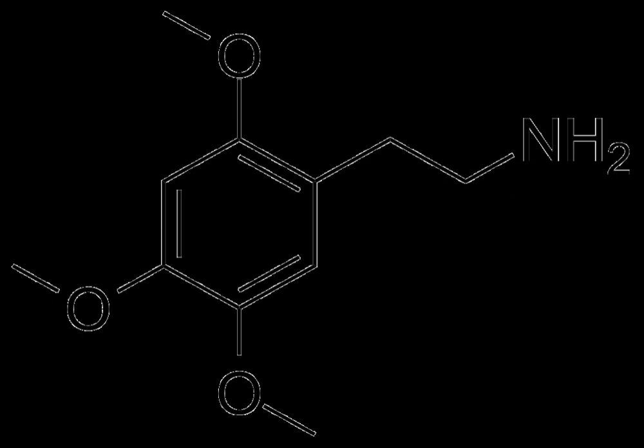2,4,5-trimethoxyphenethylamine, or 2CO, is a phenethylamine of the 2C family and was first synthesized by Janssen in 1931. It is a positional isomer of the drug mescaline and is structurally similar to the drug 2C-D.